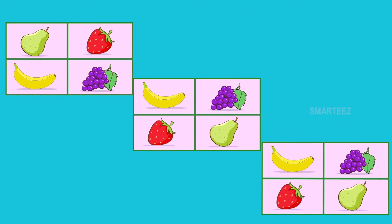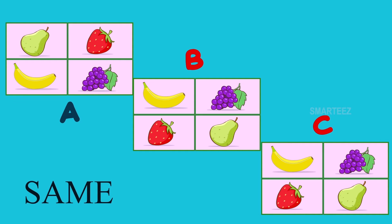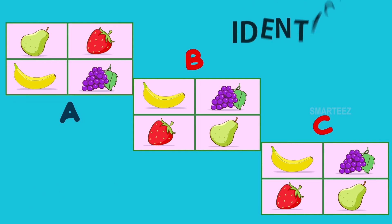Let's take a look. Let's look at the two pictures which are the same. You can see the four fruits — banana, grapes, strawberry and pear — in the same order between these two pictures B and C. So these are the only two pictures that are exactly the same. We call them identical.